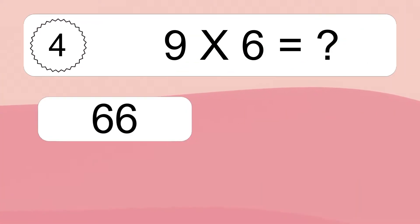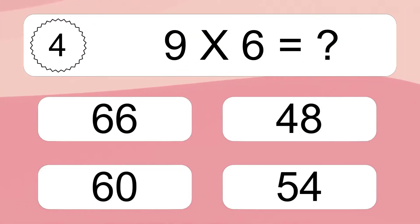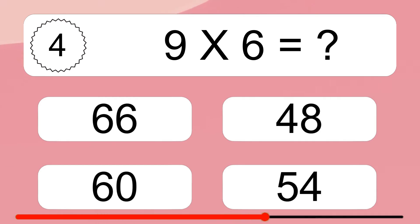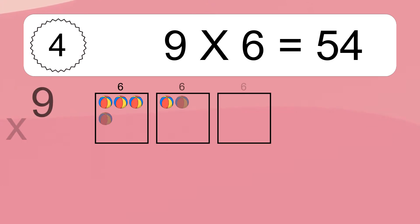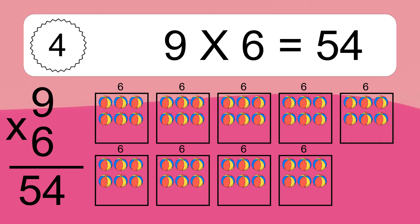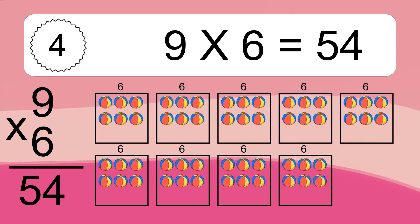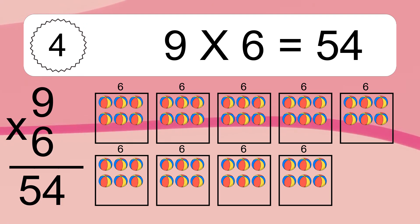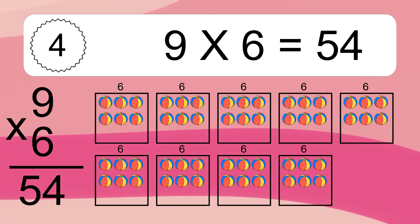Nine times six equals what? Nine times six equals 54. We have nine boxes and each box has six colorful balls inside. If you count all the balls in all the boxes together, you will have nine times six balls. This equals 54 balls.